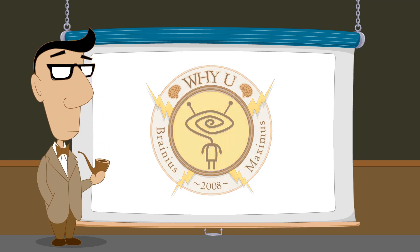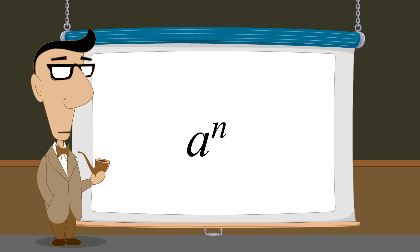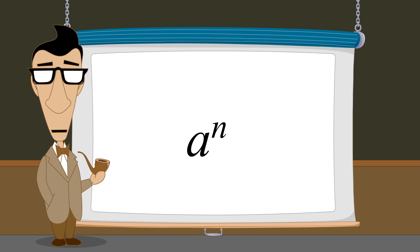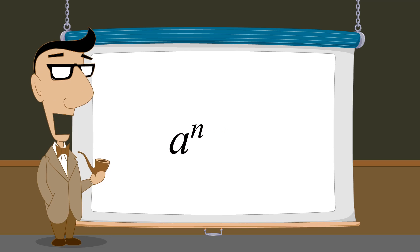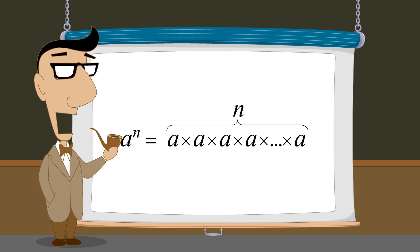In the previous lecture, we saw that exponentiation is shorthand for repeated multiplication. Any number a raised to the nth power is equivalent to multiplying n a's together.